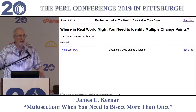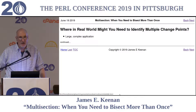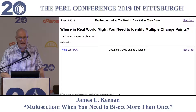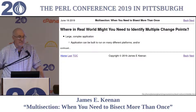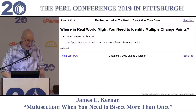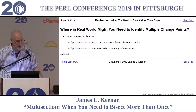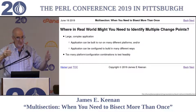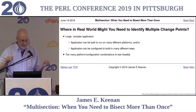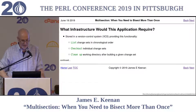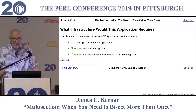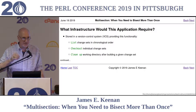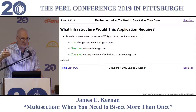Where in the real world might you need to identify multiple change points? That application is likely to be large and complex — one that needs to run on many different platforms, or can be configured to build in many different ways. Perhaps the combination of the number of platforms and configurations is so great that there are simply too many combinations to test feasibly. We also have to ask what infrastructure this application would require to identify a series of change points through multiple bisection.